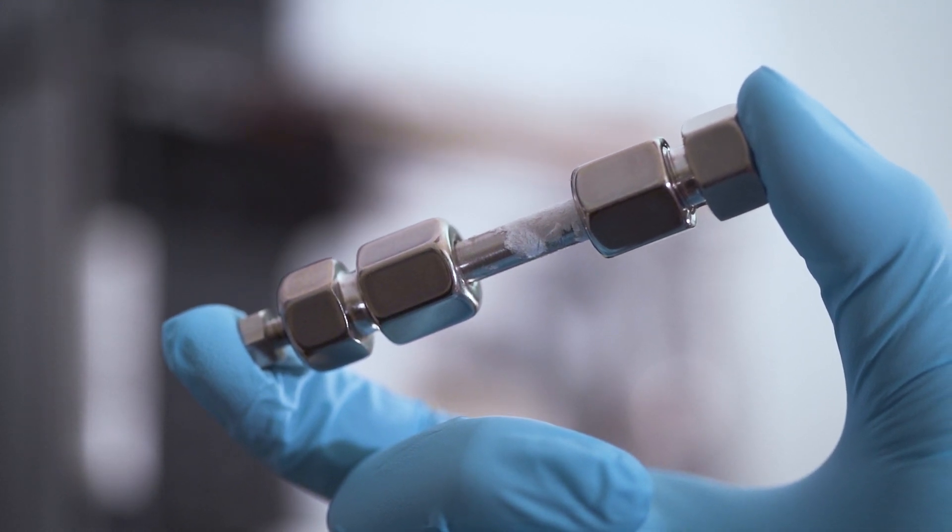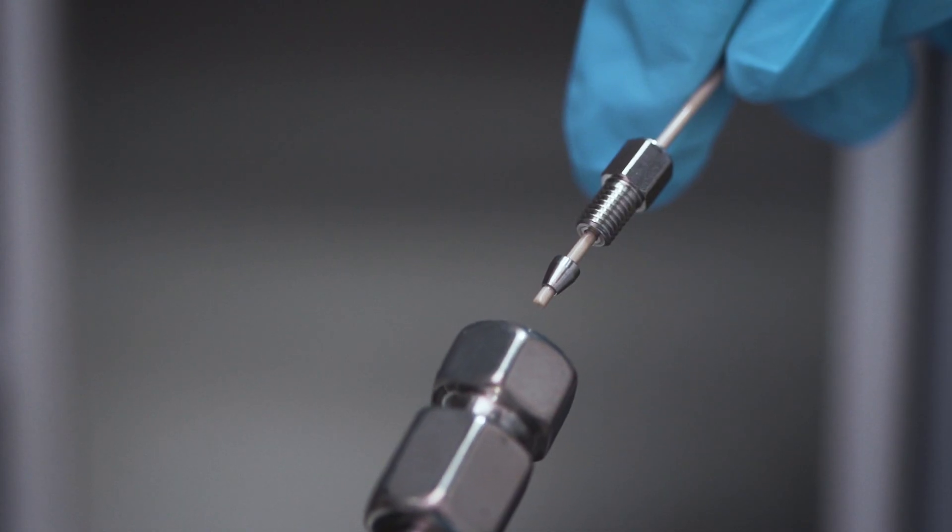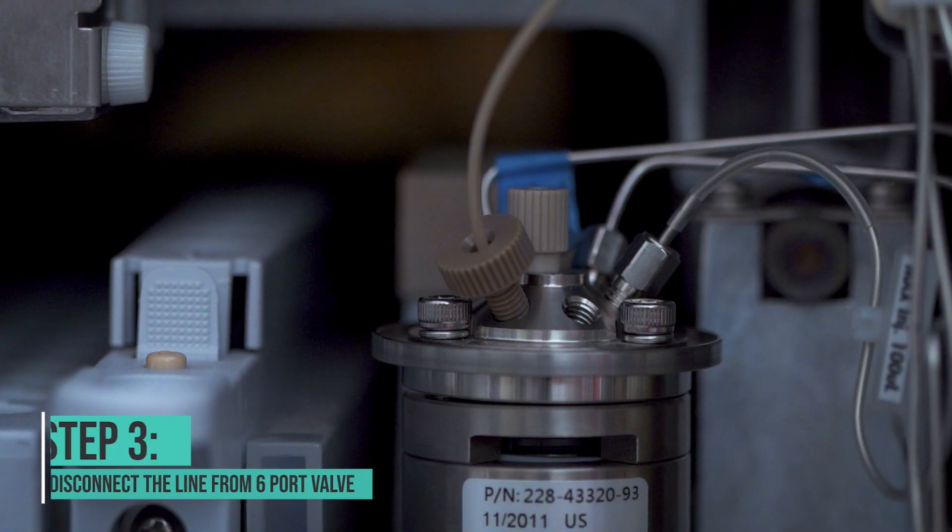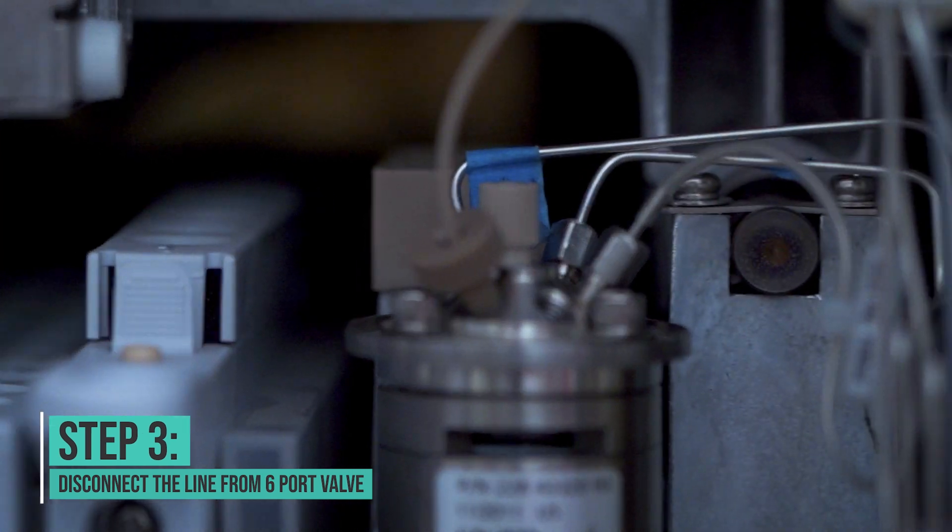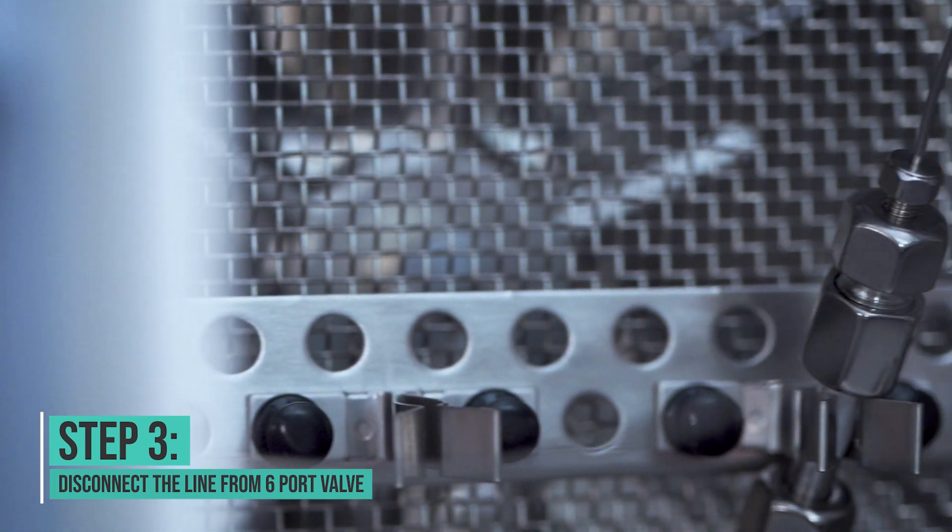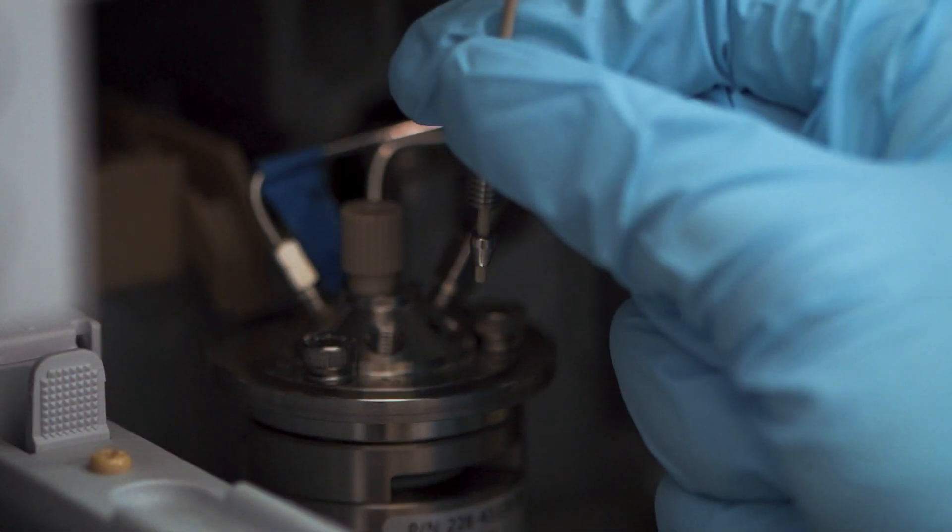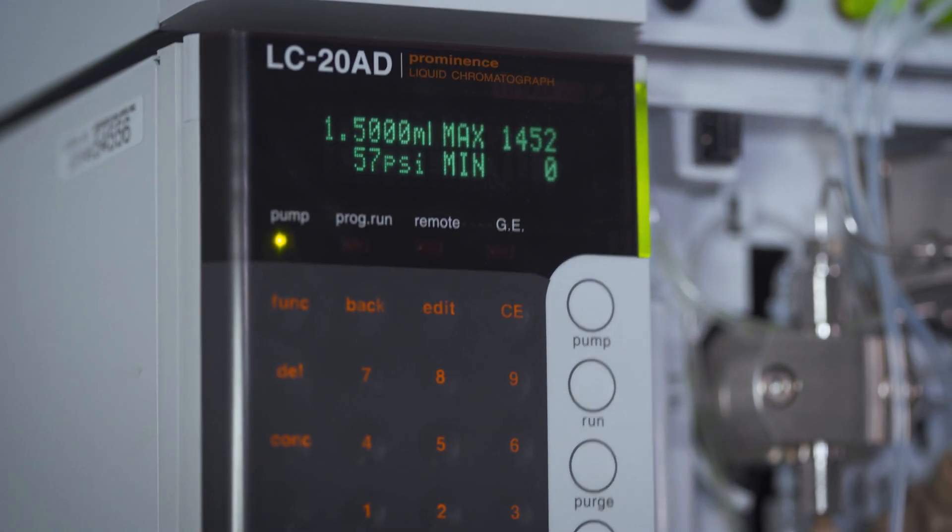If you disconnect the column and your pressure is still high, another very common culprit is the line going from the six port valve into the column. Disconnect that and see if the pressure goes down.